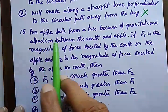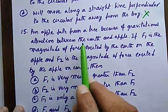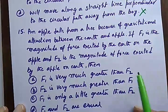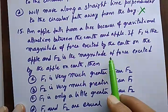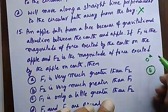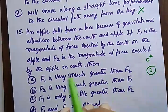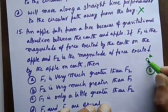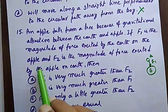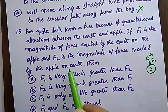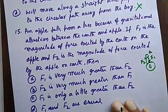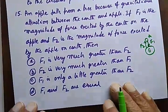The next question is question number 15 from the exemplar. An apple falls from a tree because of gravitational attraction between the earth and the apple. If f1 is the magnitude of the force exerted by the earth on the apple, and f2 is the magnitude of the force exerted by the apple on the earth — f1 acts on the apple, f2 acts on the earth.